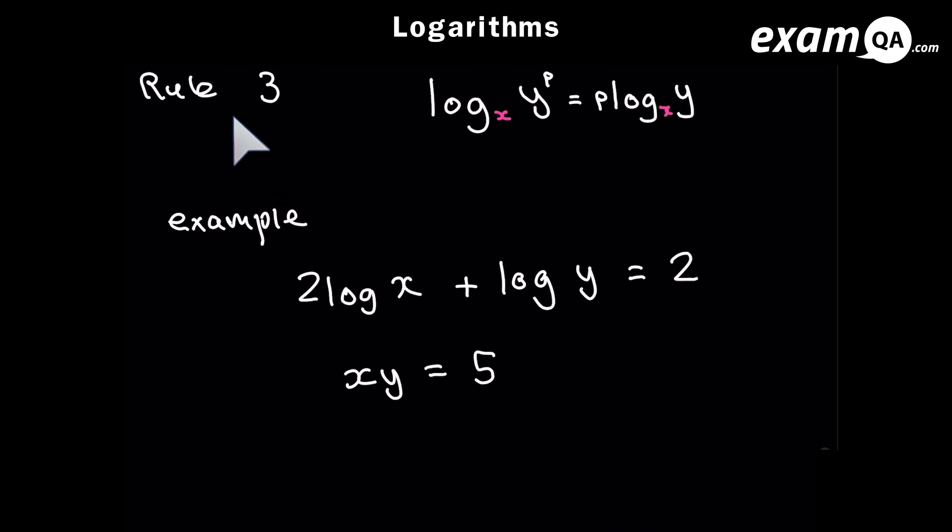And this final rule we need to know is called the power rule. And what it allows you to do is bring that power, p, to the front. And of course you can also do the reverse. So if you've got a number at the front, you can bring it up as the power.